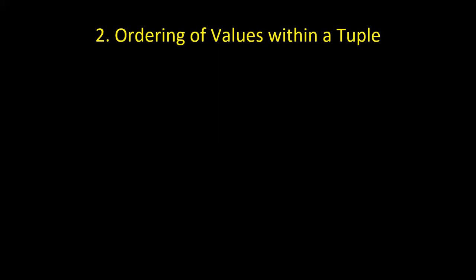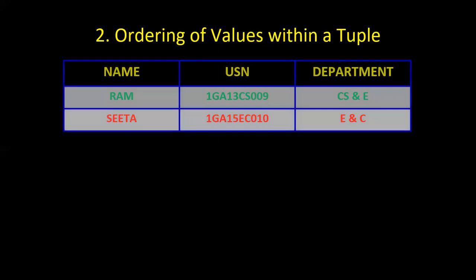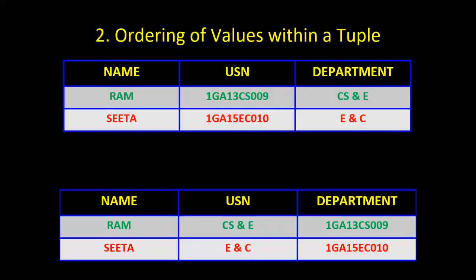The second characteristic is ordering of values within a tuple. If we exchange the value of an attribute or column within each tuple, will it change the meaning or keep the same meaning? Let's take an example with Ram and Sita for CS and EC departments. I will exchange the values in the tuple — I exchanged the value of the second column with the third column.